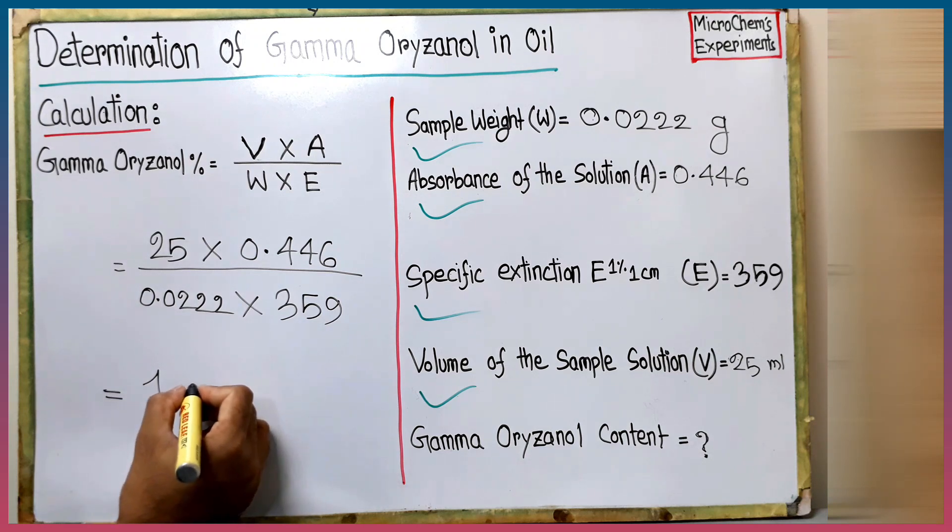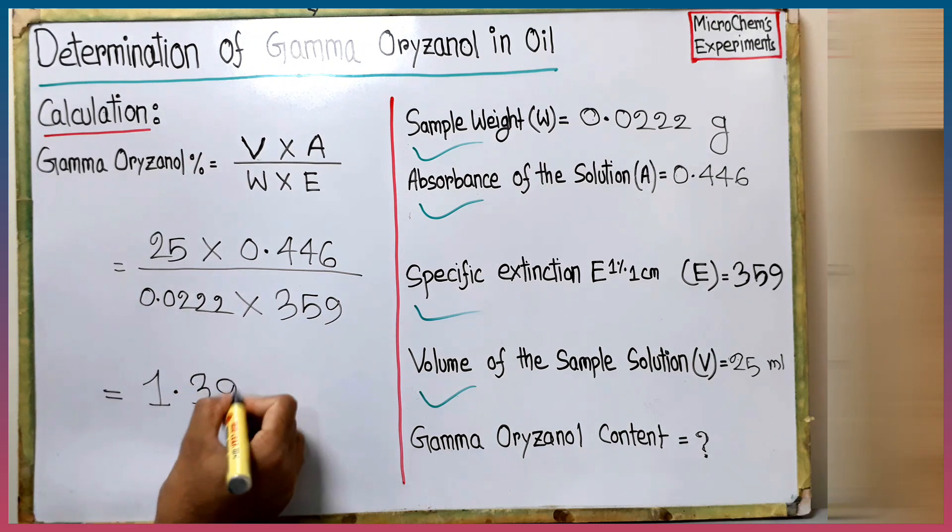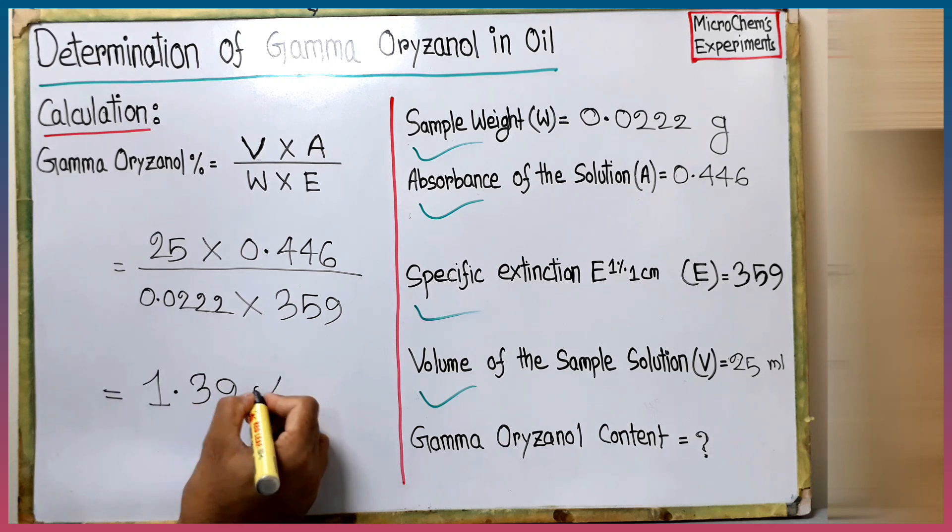By solving the equation, we get the gamma oryzanol content of our sample is 1.39%.